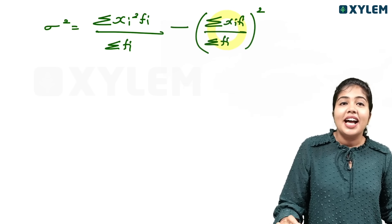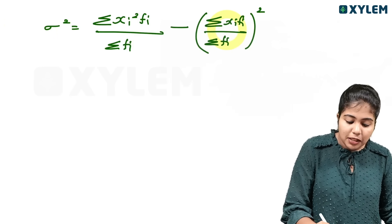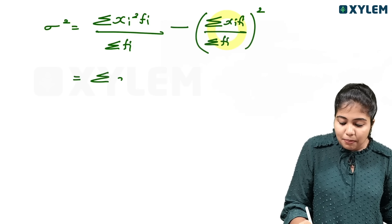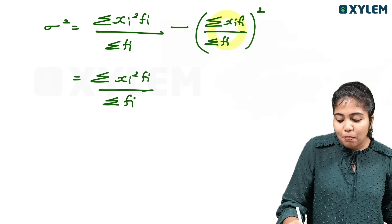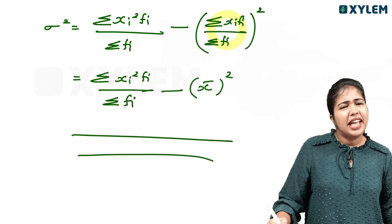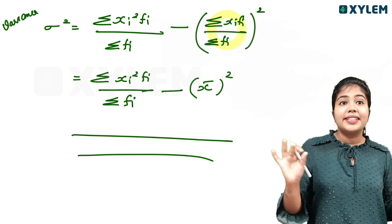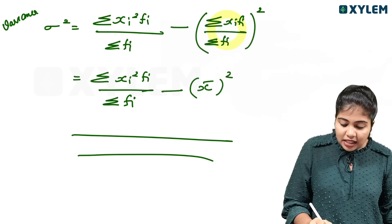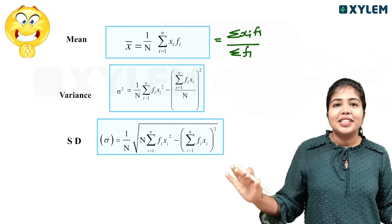X-bar is summation xi fi divided by summation fi, the whole square. We can answer sigma square: that is summation xi squared fi divided by summation fi, minus x-bar the whole square. Standard deviation is the square root of sigma square — the square root of the variance.